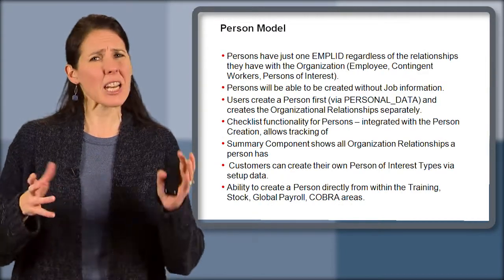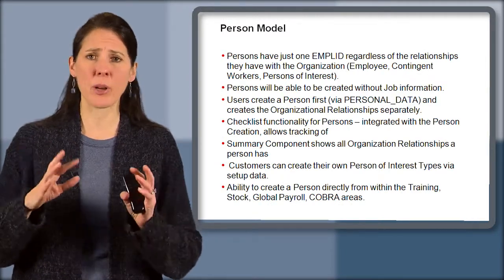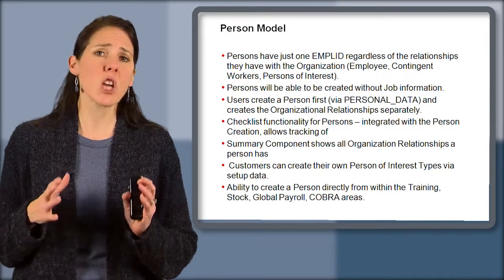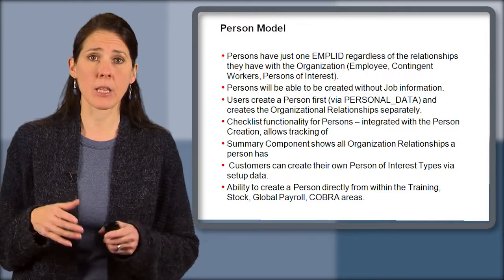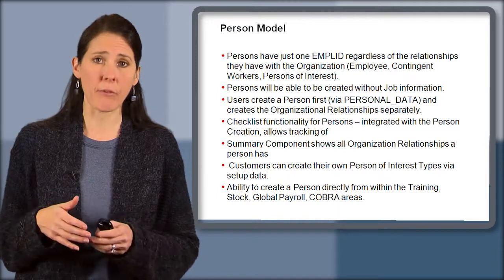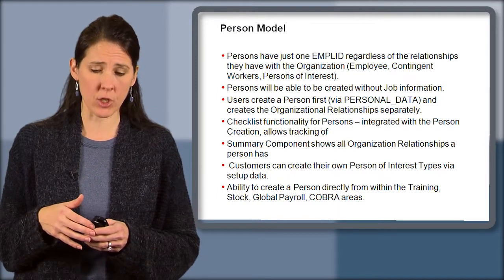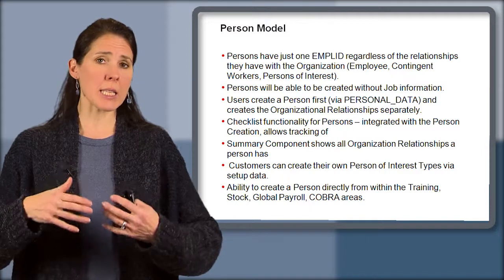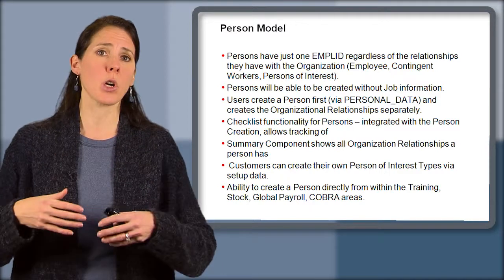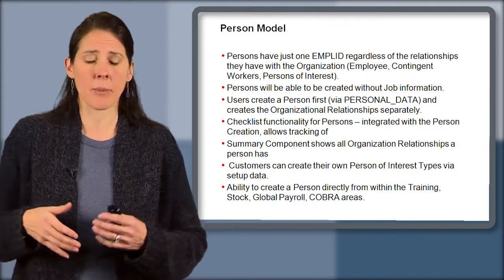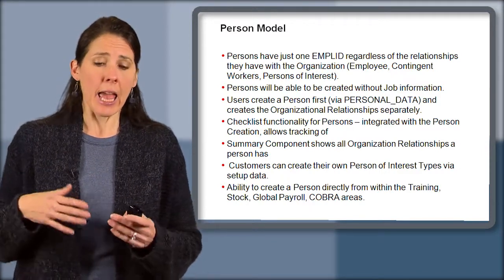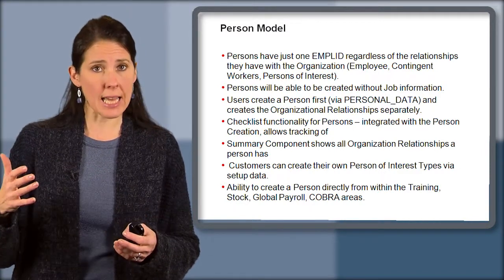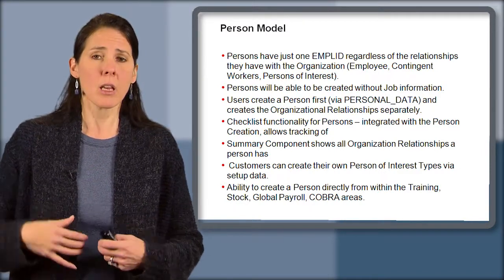So I'm going to break down Person Model with a bunch of different features. Persons have just one employee ID, or EMPL ID, regardless of the relationship that they have within the organization. We redesigned how we put employees, contingent workers, and POIs into the system in Release 8 and 9, and we've continued to use this functionality since that time and make enhancements to it.